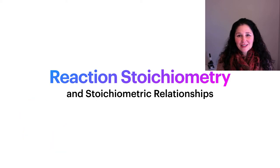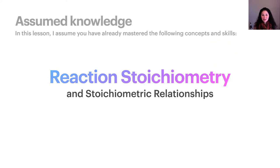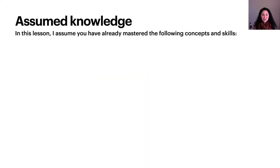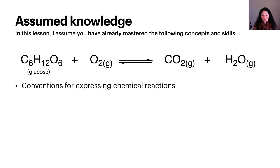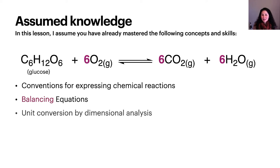Before you can understand the concepts of reaction stoichiometry, you will need to understand the conventions for expressing chemical reactions. In other words, you must be able to write and interpret chemical equations, like the one shown here. You will also need to be able to balance chemical equations, and use dimensional analysis to convert units. If you have not mastered these skills yet, please go back to the previous lessons on these topics before proceeding here.